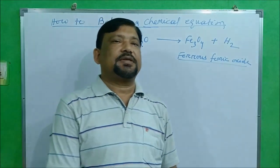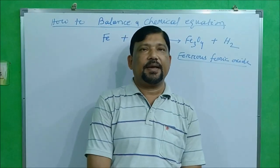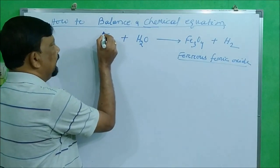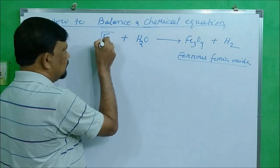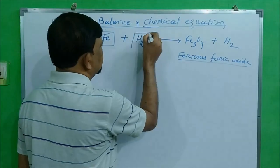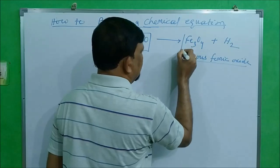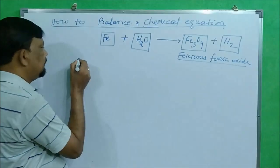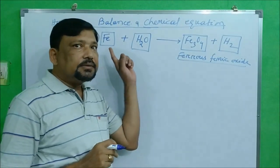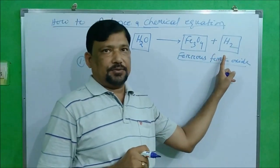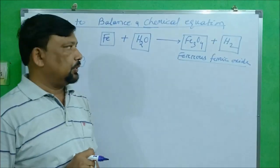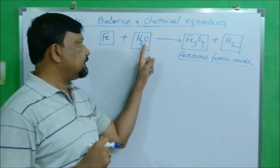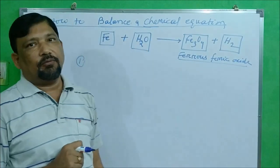According to the book, the first step of balancing a chemical equation is to draw a box around each reactant and around each product. An important point: you are not going to make any change inside the box. Whatever changes you make will be outside these boxes.